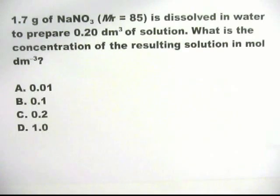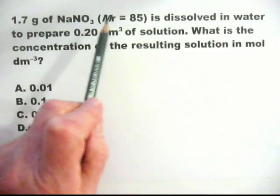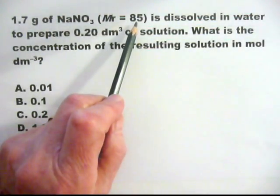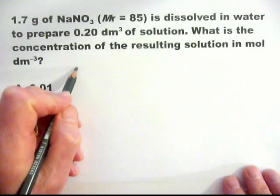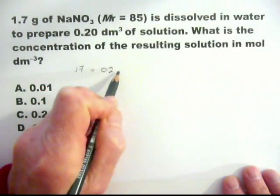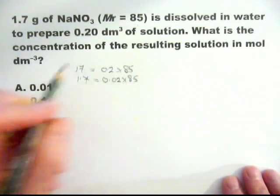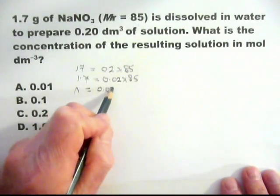And this one, some students think it's different from the others, but it's the same, based on the same principles. One extra thing you do have to notice is that there is a simple relationship between the 1.7 and the relative molecular mass, 85. They've given you the formula and told you what the relative molecular mass is. You have to see that 1.7 is 0.02 times 85, and therefore, the number of moles is N equals 0.02 moles.